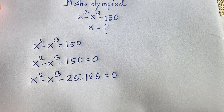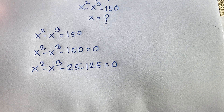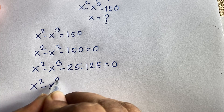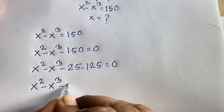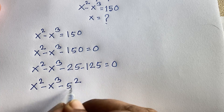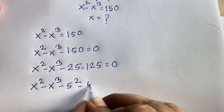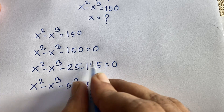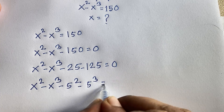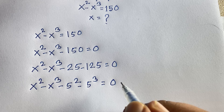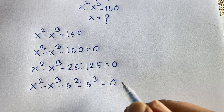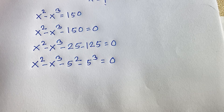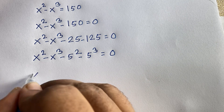Now I can recognize that 25 is 5 squared and 125 is 5 to the power 3. So the expression becomes: x squared minus x cubed minus 5 squared minus 5 cubed is equal to 0.